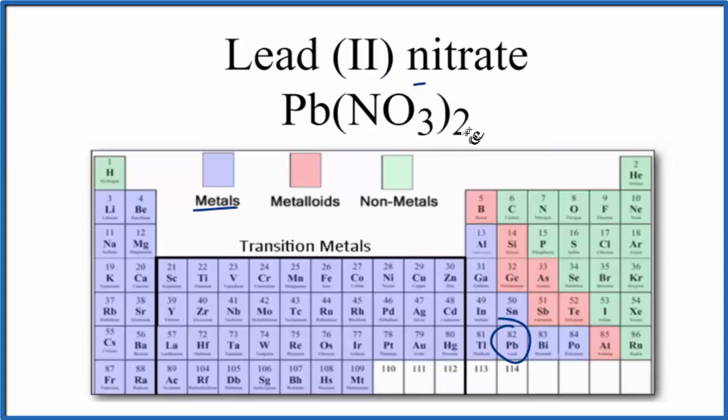Because we have two of these, that gives us two minus. So the lead has to have an ionic charge of two plus. That's why we call this lead (II) nitrate.